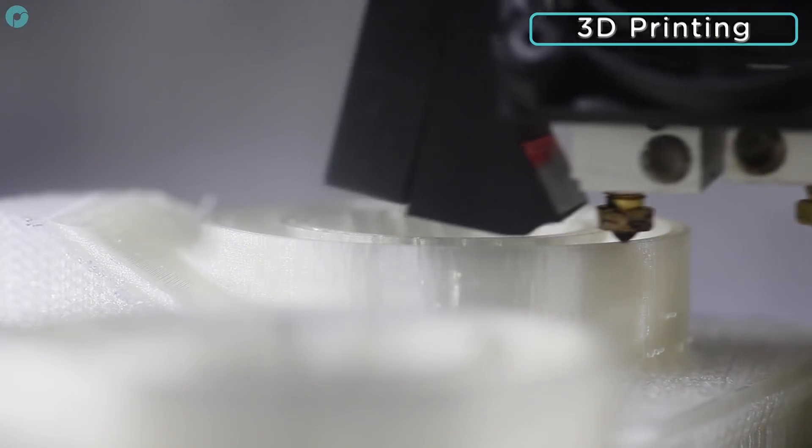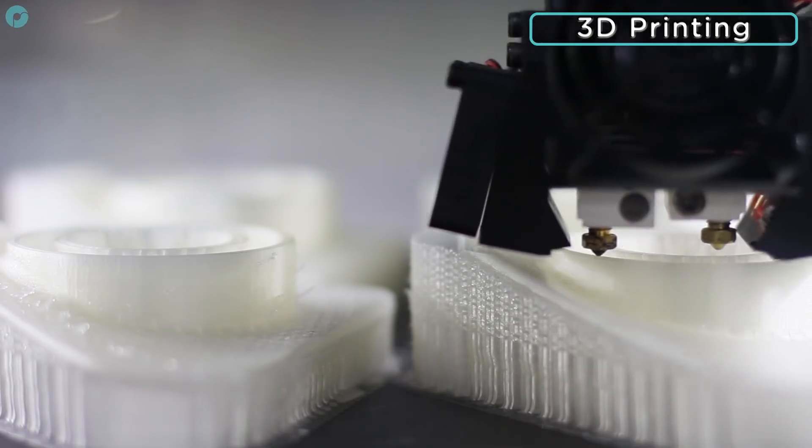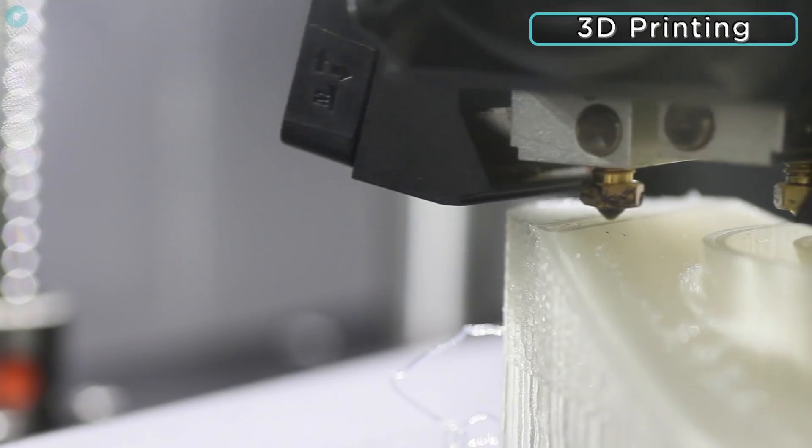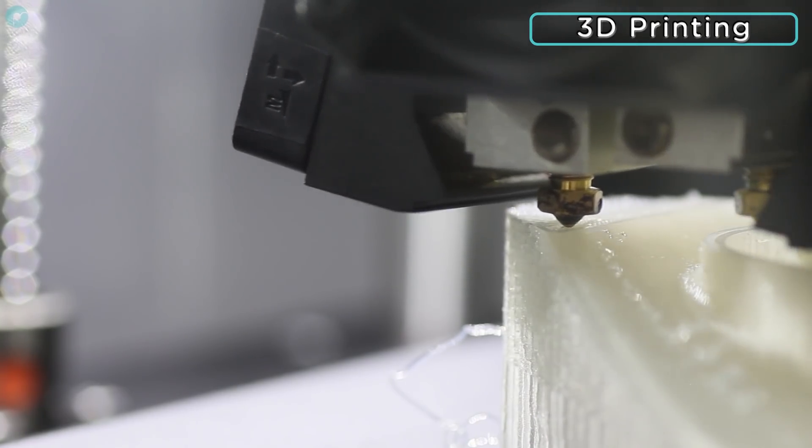Polycast is a very easy to use 3D printing material, using regular PLA settings. With no heated bed or enclosed chamber required, you can print Polycast on any extrusion-based 3D printer.